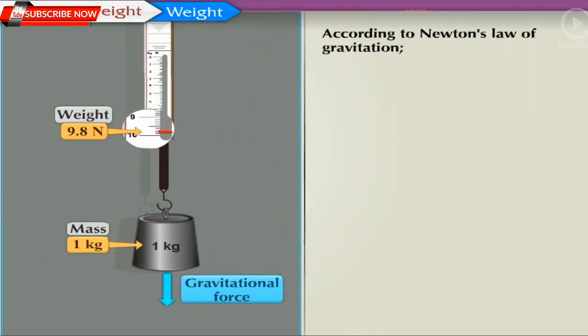According to Newton's law of gravitation, the gravitational force F acting on the object of mass small m is equal to universal gravitational constant capital G into mass of the Earth capital M into mass of the object small m upon radius of the Earth capital R square. This is equation 1.